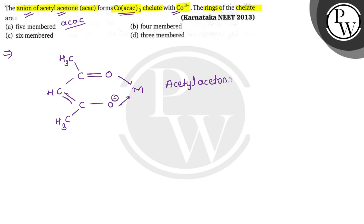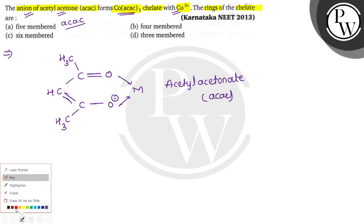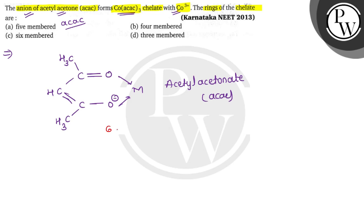This is the acetyl acetone (ACAC) structure properly drawn. So here we can see how many members the ring has. We can observe it is a 6-membered ring.